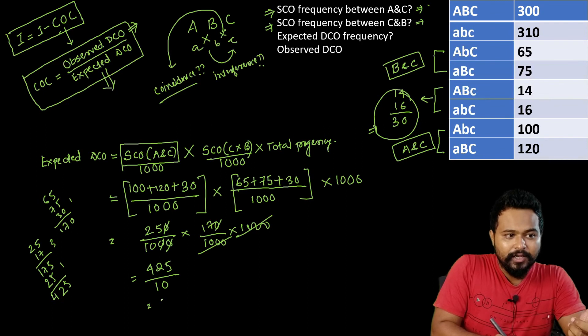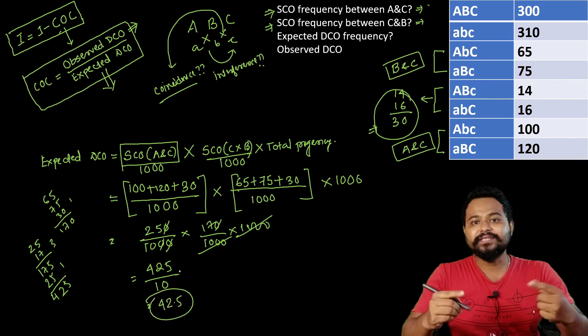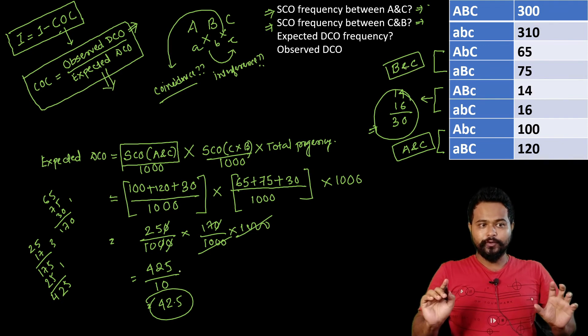Dividing by 10, the expected double crossover comes out to 42.5. So the expected double crossover value is 42.5.